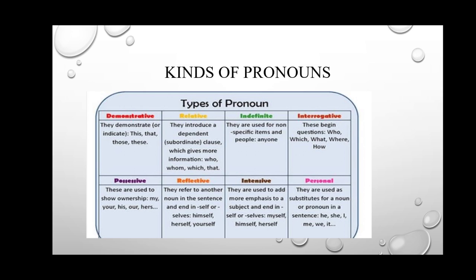Indefinite pronouns are used for non-specific items and people — those who are not specified. For example, words like 'anyone', 'anywhere' — these refer to random, unspecified people or places. This is what makes them indefinite pronouns.